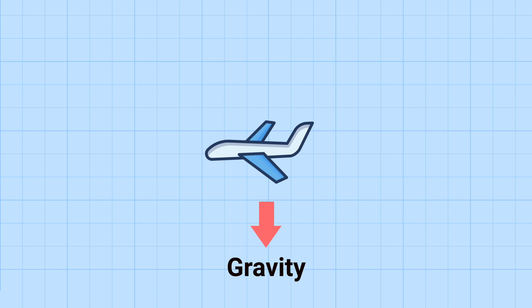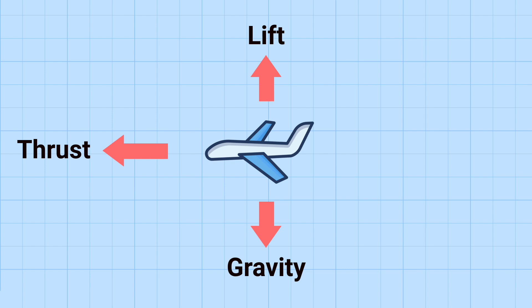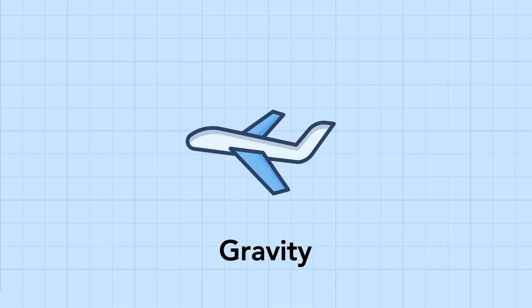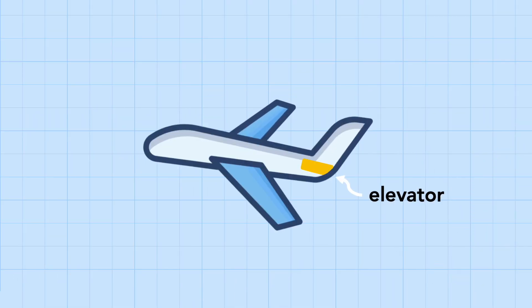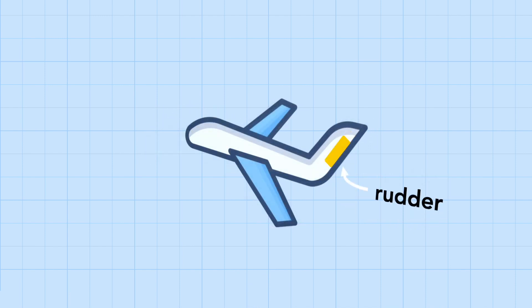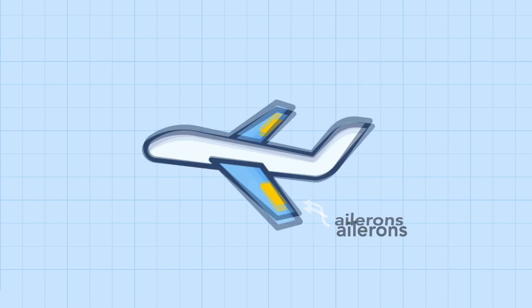For an aircraft in level flight there are four forces acting on it. Gravity, or its weight, pulling it down, is opposed by an upward force called lift. Thrust enabling it to go forward is opposed by drag pulling it back. Gravity is pretty simple to understand, but we're going to break down how lift, thrust, and drag are produced and how different components of the plane are designed to control these forces depending on the phase of flight.